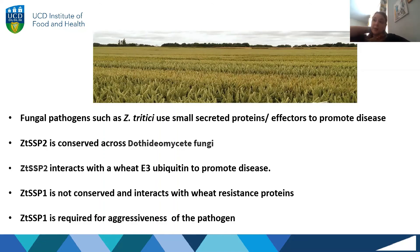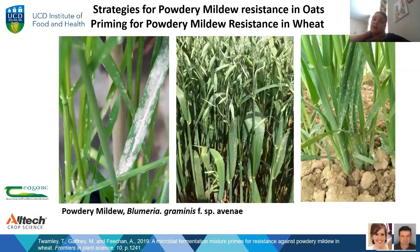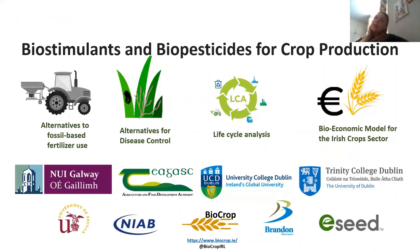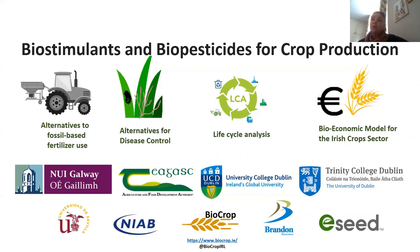We also do work on powdery mildew in wheat and oats. Aisling just finished a nice project looking at resistance genes in heritage and commercial oat varieties. Tony was looking at a biostimulant product from Ultec and found it could protect against powdery mildew. We also just started a new project with funding from Datham — a two million euro project looking at whether biostimulants and biopesticides can reduce dependence on fossil-based fertilizers and pesticides. We hope to have some interesting results from that BioCrop project in the next couple of years.